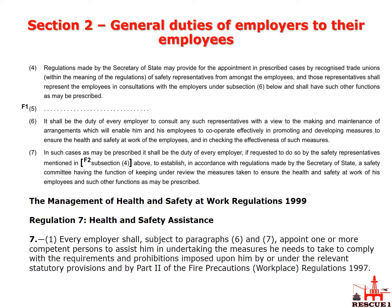Sections 2.4 to 2.7 deal with safety assistance, safety representatives, trade unions, consultations, and all that. It must be tied into the Management of Health and Safety at Work Regs, specifically Regulation 7 for health and safety assistance, which states that every employer shall appoint one or more competent persons to assist in undertaking the measures needed to comply with the relevant statutory provisions. It's really important to join these pieces of legislation together so you have a clear understanding of which sections impose what requirements on whom.